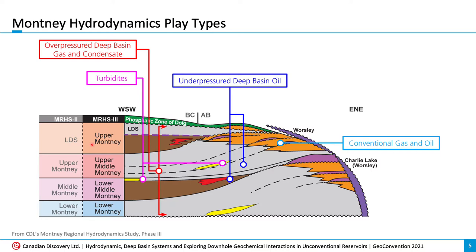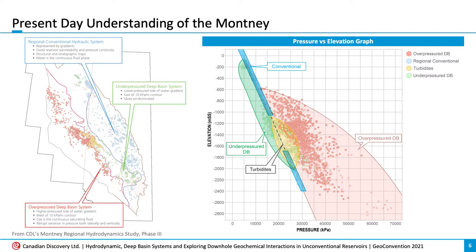The Motney can also be split into four main hydrodynamic plate types, which include the over-pressure Deep Basin, the turbidites, the under-pressure Deep Basin, and the conventional system. When we look at these systems on a map, we can see that the furthest to the west is the over-pressure Deep Basin with red data points, and then the turbidites, located in a small geographic area right here, annotated by the yellow data points. We then have the under-pressure Deep Basin system through here with the green data points, and finally, furthest to the east is the conventional system.